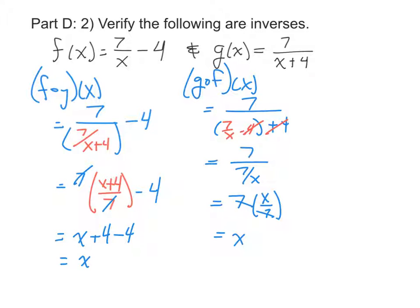The last step is to state our conclusion with the three dots, meaning therefore f of x and g of x are inverses.